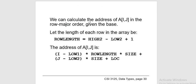We can calculate the address of element a[i][j] in row major order given these spaces. Let the length of each row in the array be row_length = high2 - low2 + 1. The address of a[i][j] is: base + (i - low1) * row_length * size.